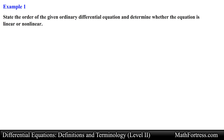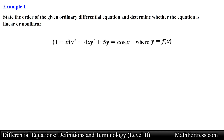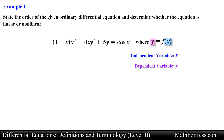State the order of the given ordinary differential equation and determine whether the equation is linear or nonlinear. The quantity (1 minus x) times y double prime minus 4x times y prime plus 5y equals cosine of x, where y equals f of x. The first thing to notice is that we are told y is a function of x, meaning the independent variable is x and the dependent variable is y. You always need to identify the independent and dependent variable before you attempt to classify the differential equation.